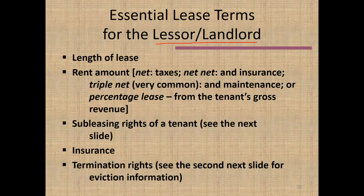When a lease provides for some amount of rent, it may be a net agreement — the lessee pays rent plus taxes on the land. A net-net arrangement means the lessee pays taxes and insurance. A triple-net arrangement — very common — means the lessee pays taxes, insurance, and maintenance on the property. In that situation, the landlord is not involved in those functions.